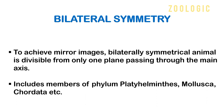Bilateral symmetry is the arrangement of body parts in such a way that the body can be divided into two equal halves only from one plane — that is the mid-dorsal line passing through the main axis. Animals possessing bilateral symmetry are said to be bilaterally symmetrical animals. They include phylum Platyhelminthes, Nematoda, Annelida, Mollusca, Arthropoda, and phylum Chordata.